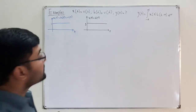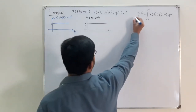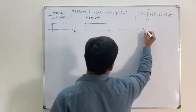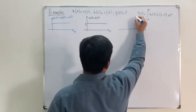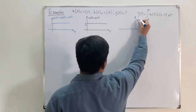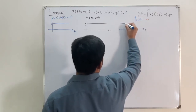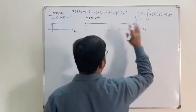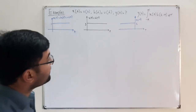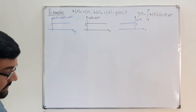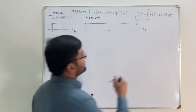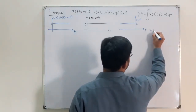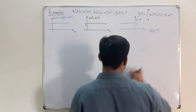Now the next step is to time-reverse h(τ). So we have h(−τ), which is a mirror image of h(τ) about the y-axis. After that, we need to shift it to get h(t − τ).